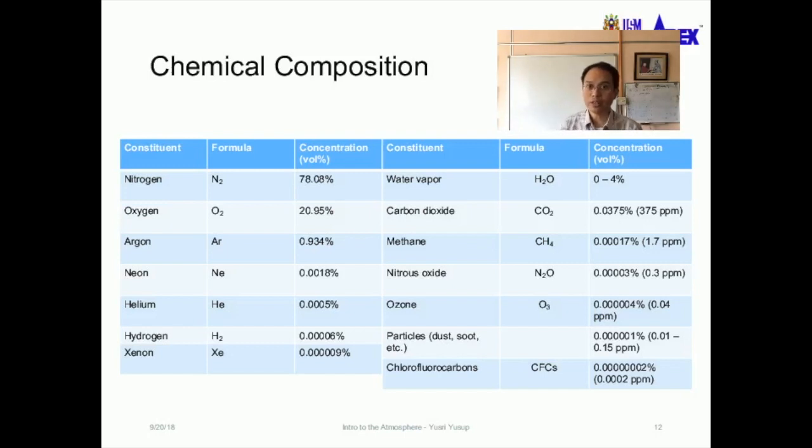Below oxygen is the noble gas argon at about one percent, and then another noble gas neon at 0.0018 percent. It exponentially becomes smaller and smaller for the other trace gases like helium at 0.0005 percent, hydrogen at 0.00006 percent, xenon and so on.